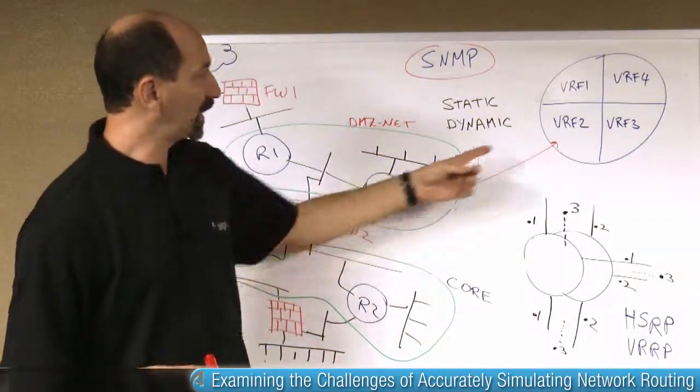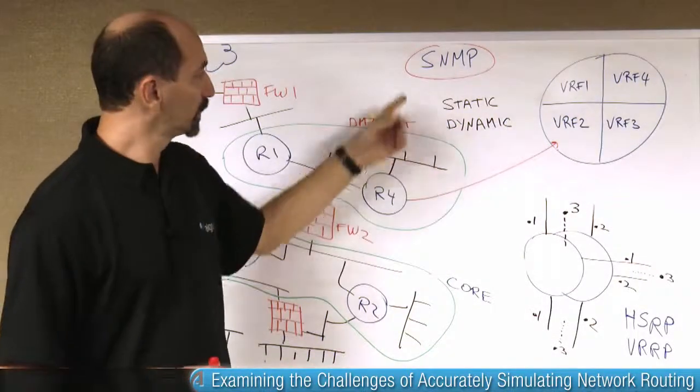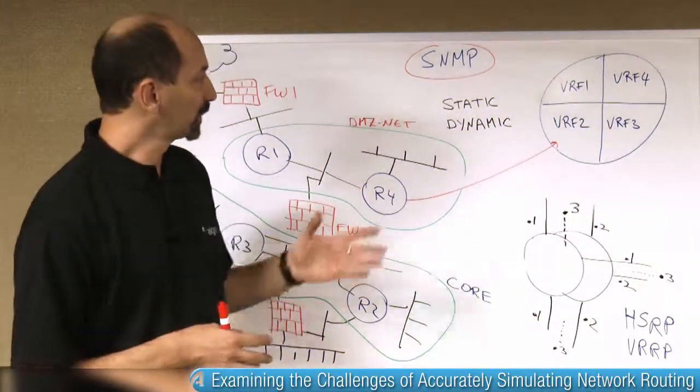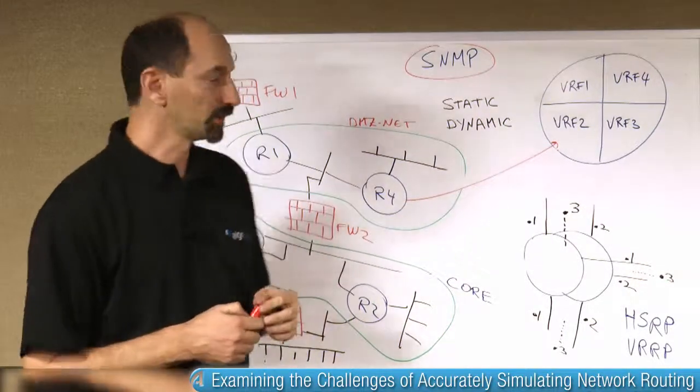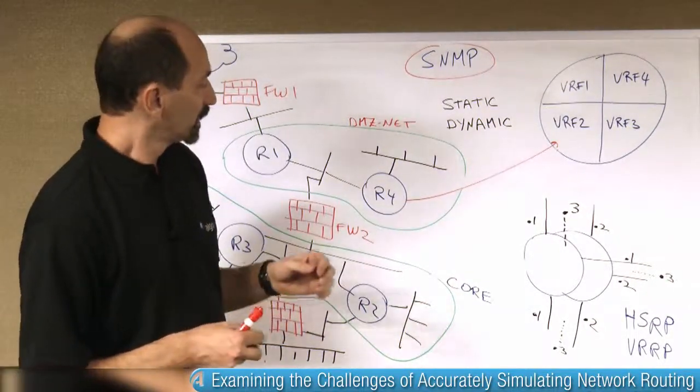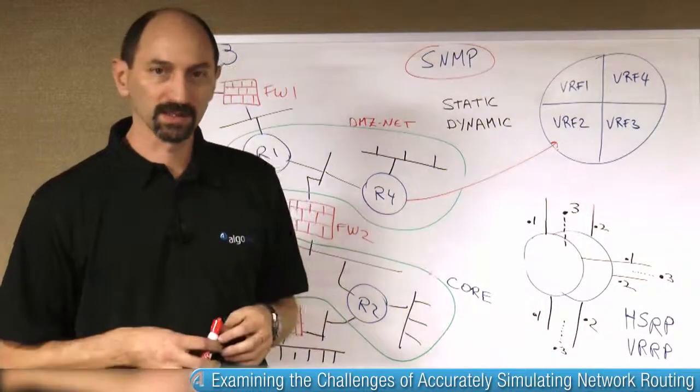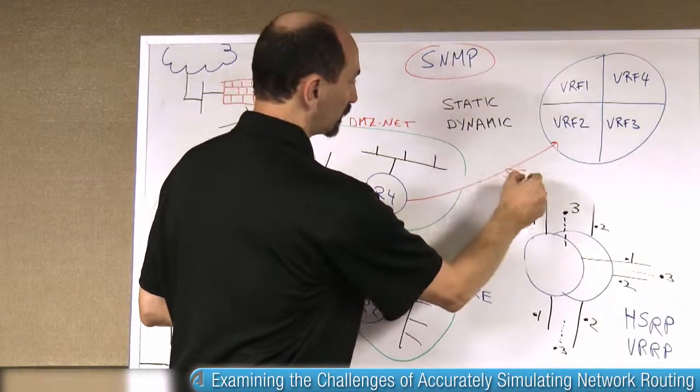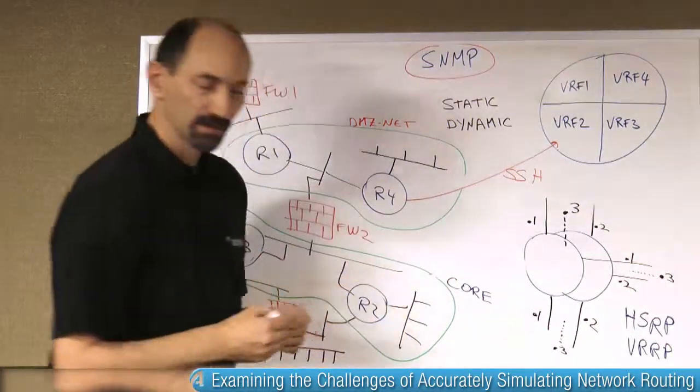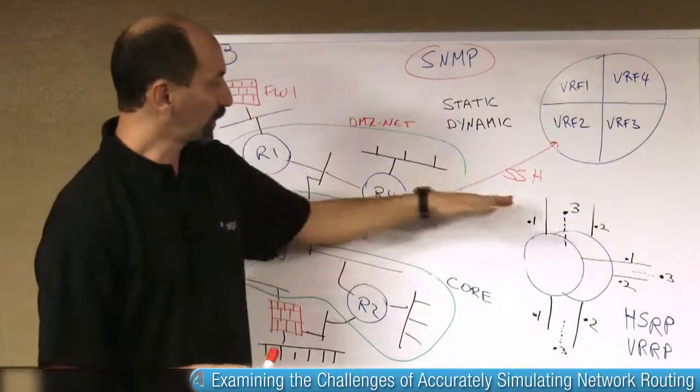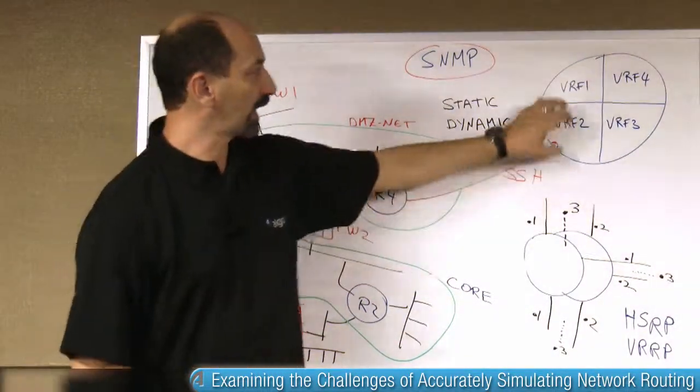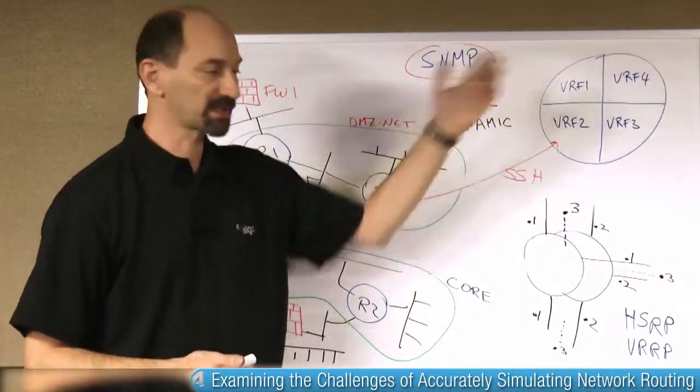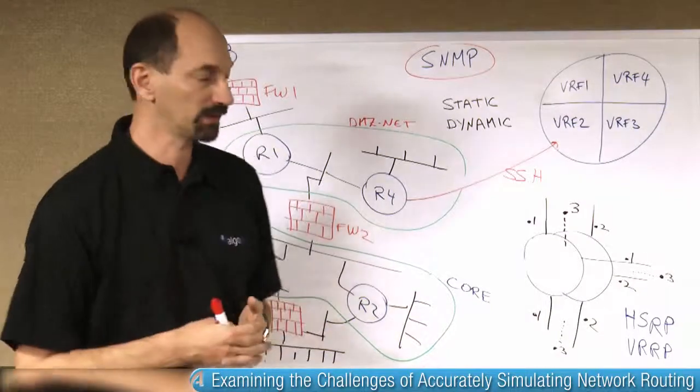Basically, what this means is if you have a multi-VRF router, using SNMP is probably not going to give you the results that you want. You'll get wrong routing information out of the device. So you have to resort to a different mechanism of extracting the routes, for instance, using SSH to the command line of the device. And if you connect that way, you can extract each routing table separately, issuing the appropriate commands and specifying the name of the VRF that you're interested in.